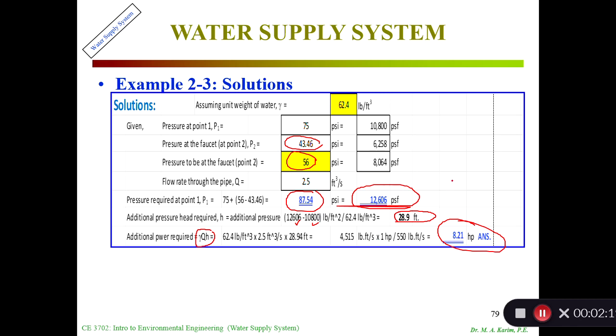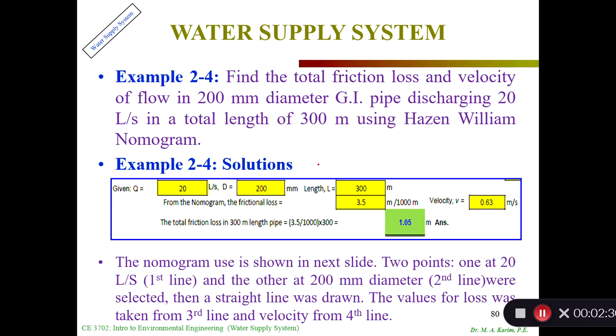This is my additional pressure, the additional horsepower or power pump that I need to provide the 56 PSI pressure into the house at the second floor.